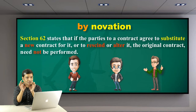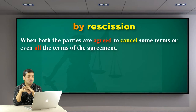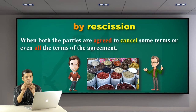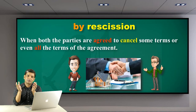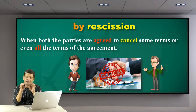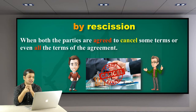The second mode is rescission. When both the parties agree to cancel some terms or even all the terms of the agreement, this is rescission. Taking the spice business example: in novation you start something new, but in rescission, both of you agree not to start anything new — rather, both agree to wind up that contract and business altogether. Both take responsibilities together with no issue. By that mode, the contract can be discharged through rescission.